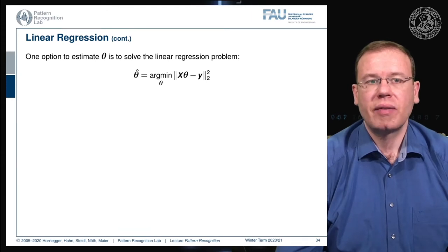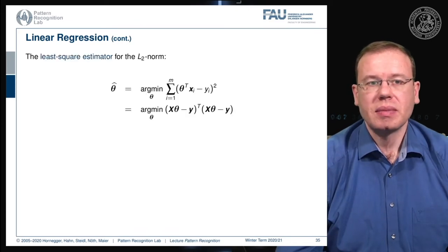How can we do the estimation? We simply estimate theta to solve the linear regression problem. We take the matrix X, multiply it with theta, then subtract it from y and take the 2-norm squared and compute the minimum with respect to theta. We can break up this norm and build the least square estimator. This is essentially an inner product.